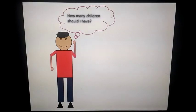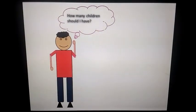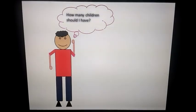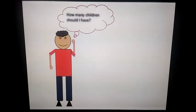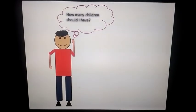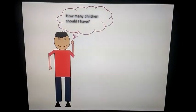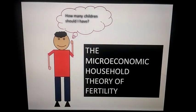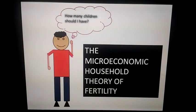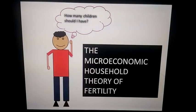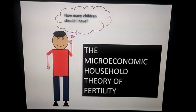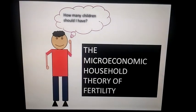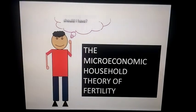Welcome back to the channel. Today we have an interesting economic theory. In a previous video we talked about the demographic transition theory, which states that in the third stage of demographic transition there is a decline in the birth rate as well as the death rates. Economists wanted to study the reason for this decline in the birth rate, and have come up with an important and interesting theory called the microeconomic household theory of fertility.